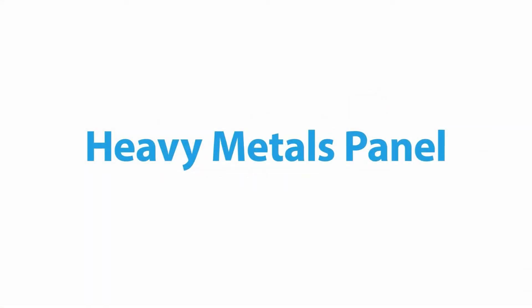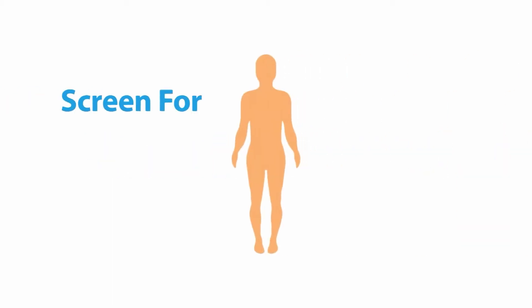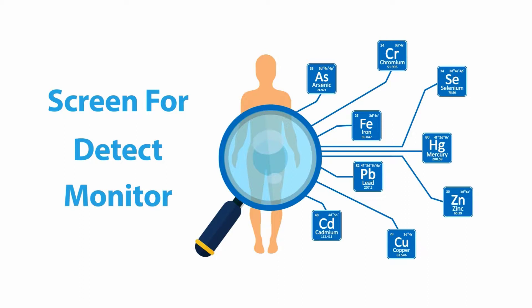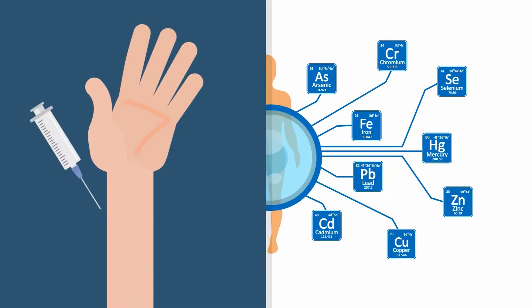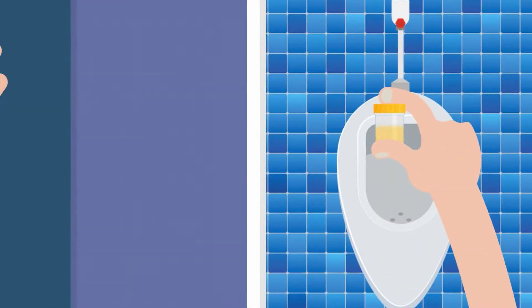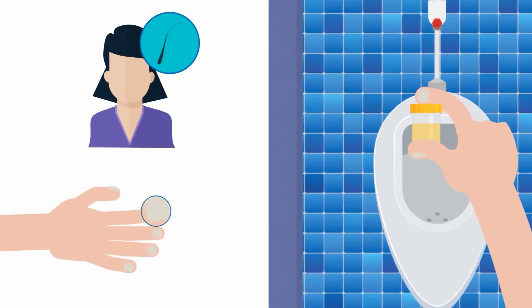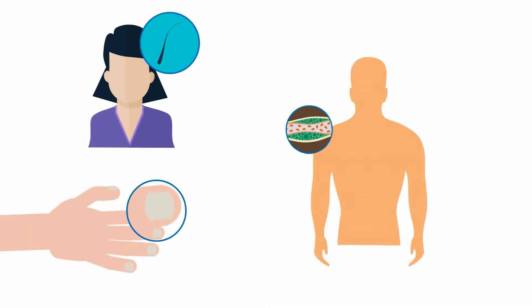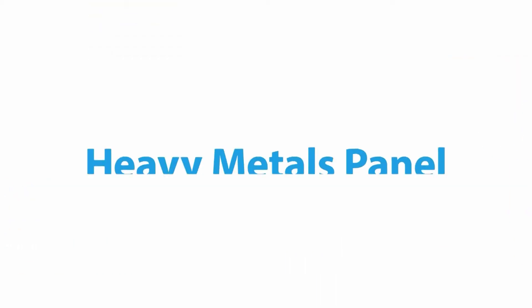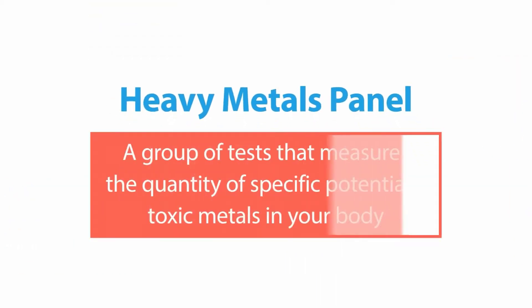Heavy metals panel tests are performed to screen for, detect, and monitor excessive exposure to specific heavy metals. The sample required is a blood sample drawn from a vein in your arm, or a 24-hour urine sample. Rarely, a hair or nail sample, tissue sample, or other body fluid sample may be used.